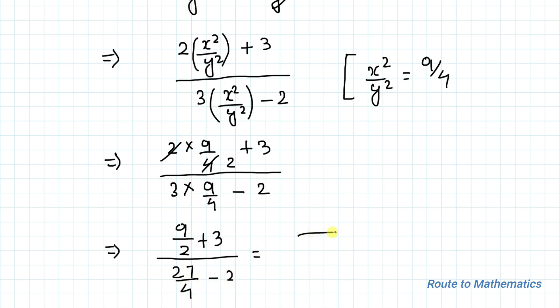If I take this, same we have 2, 9 plus 6 divided by 27 minus 8 divided by 4. So we have 9 plus 6 is 15 by 2 divided by 19 by 4.